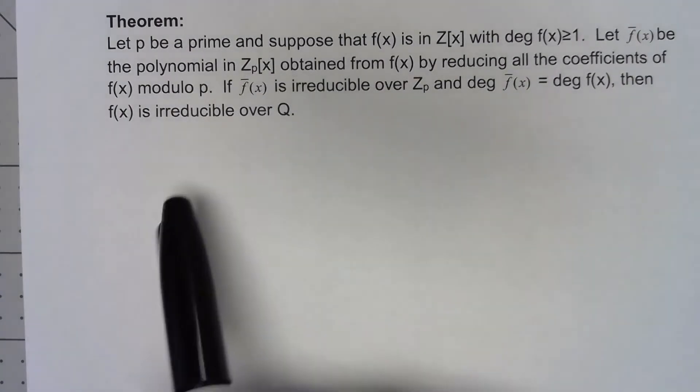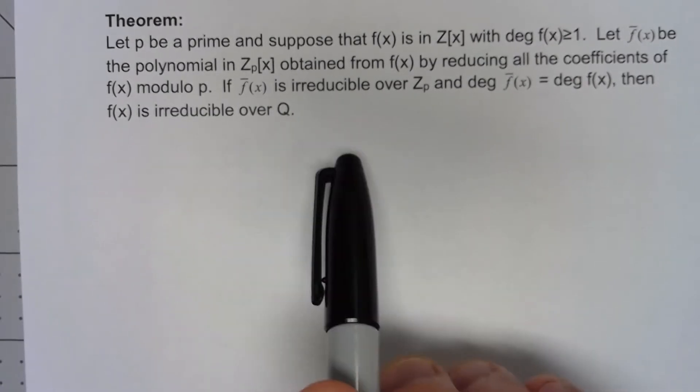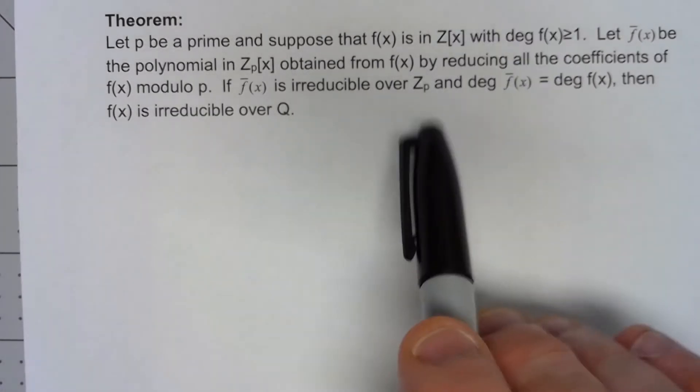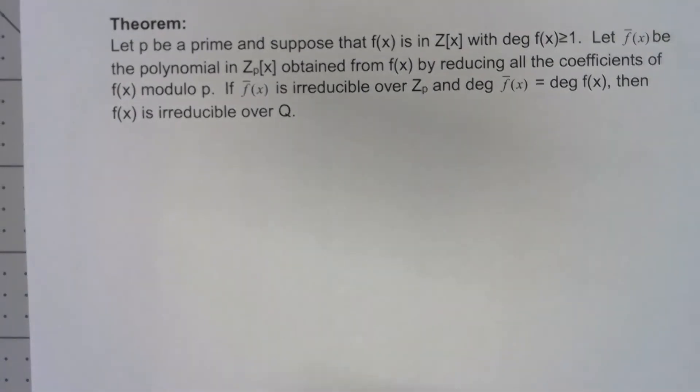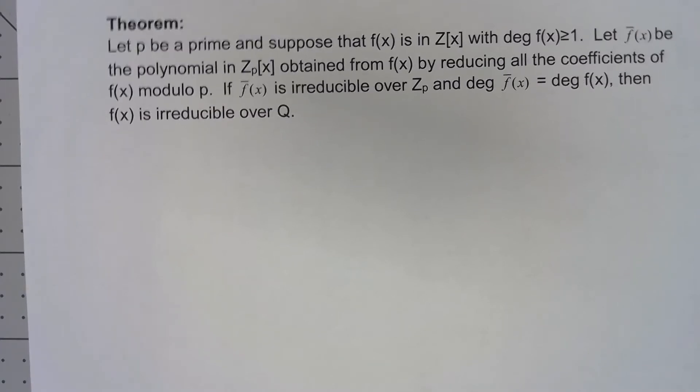I'm not going to prove this. It basically comes down to just showing that if it factors in Z_p, it's going to factor in Z_p. So let's take a look at an example of how this is so amazingly useful to us.